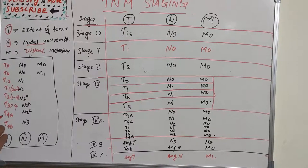T4A is moderately advanced local disease, meaning it invades through cortical bone, inferior alveolar nerve, floor of the mouth, or skin of face including chin or nose. Tumor invades adjacent structures through cortical bone into deeper muscles like genioglossus, hyoglossus, palatoglossus, and maybe even maxillary sinus.